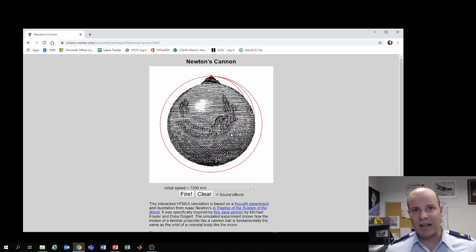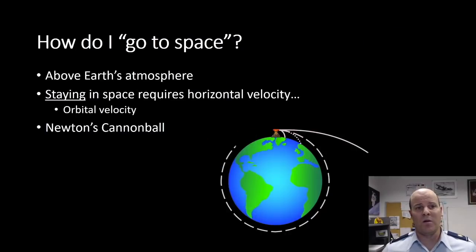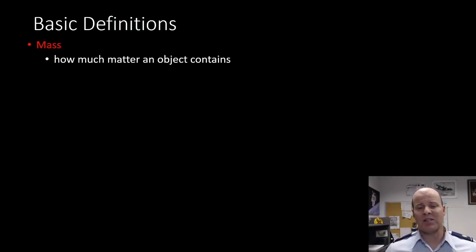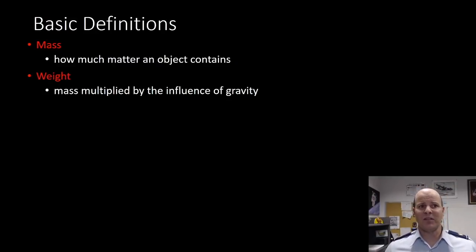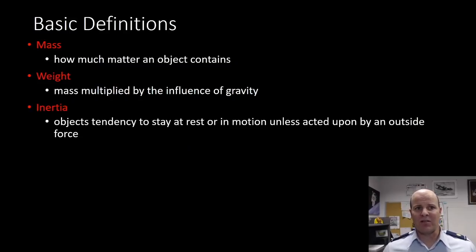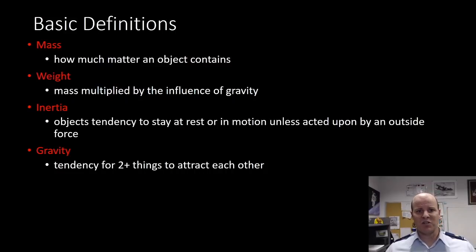So that's how a satellite is actually able to stay in orbit above the surface of the Earth, which is really useful for military purposes. So here's some basic definitions. Mass. Mass is how much matter an object contains. And weight is different than mass because it's going to be that mass multiplied by the influence of gravity. Inertia relates to an object's tendency to stay at rest or in motion unless acted upon by an outside force. Gravity is the tendency for two things to attract each other.